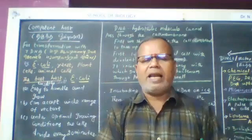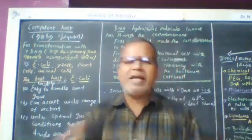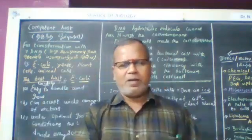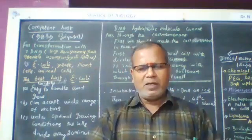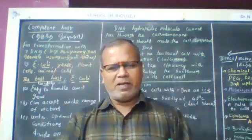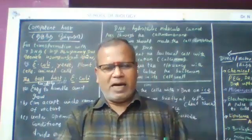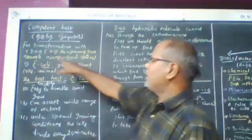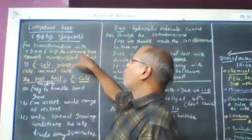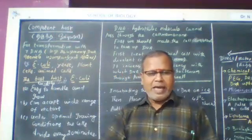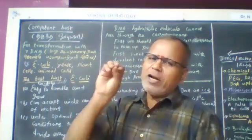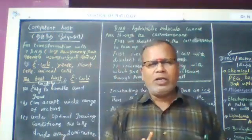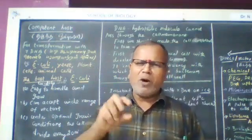They get recombinant DNA or hybrid DNA. The DNA ligase joins them. The product is the recombinant DNA; the competent host is distinct from it.